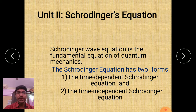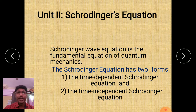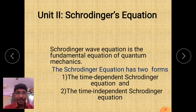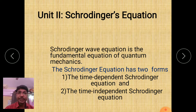As you know, the Schrödinger wave equation is the fundamental equation of quantum mechanics, just as Newton's second law of motion is the fundamental equation of classical mechanics. This equation was derived by Schrödinger in 1925 using the concept of wave function, on the basis of de Broglie's wave and Planck's quantum theory. The Schrödinger wave equation has two forms: the time dependent Schrödinger equation and the time independent Schrödinger equation.